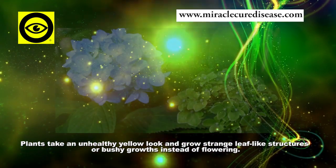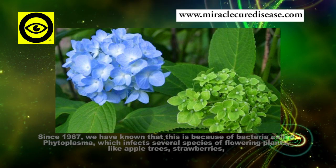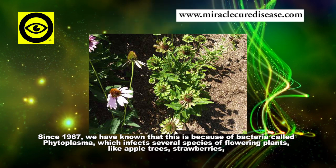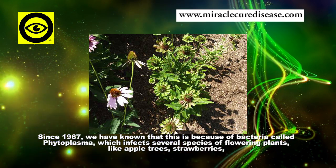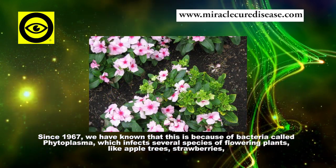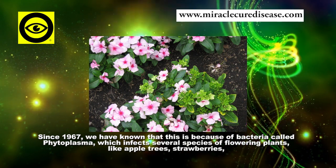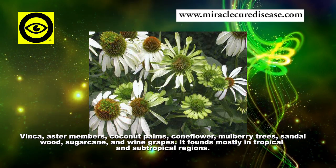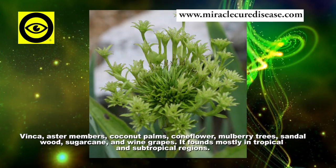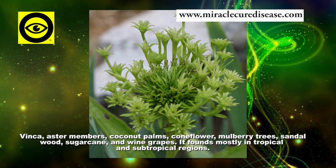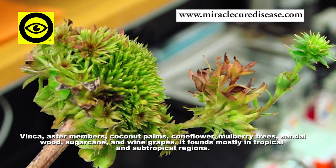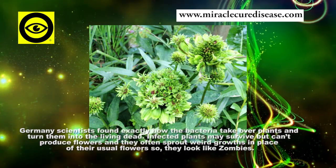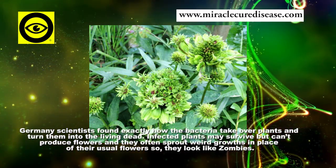Plants grow strange leaf-like structures or bushy growths instead of flowering. Since 1967, we have known this is caused by bacteria called phytoplasma, which infects several species of flowering plants including apple trees, strawberries, vinca, asters, coconut palms, coneflower, mulberry trees, sandalwood, sugarcane, and wine grapes. It is found mostly in tropical and subtropical regions.